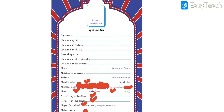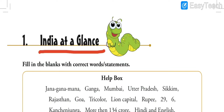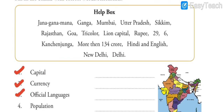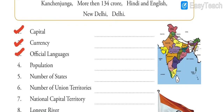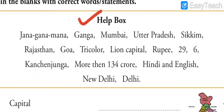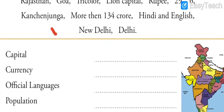Moving ahead, this is our first topic in Chapter 1: India at a Glance. In this topic we are going to learn various things about India - its capital, currency, official language, population, number of states, and many more things. Now, you have to listen to me carefully - don't start writing answers right away. Listen first, then write after class, because the help box is given to help you complete the page.